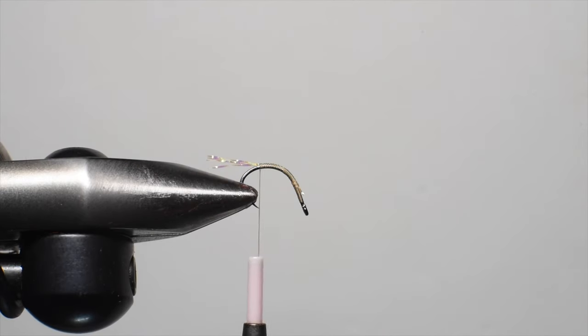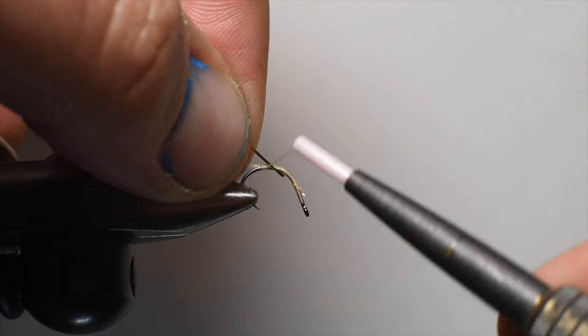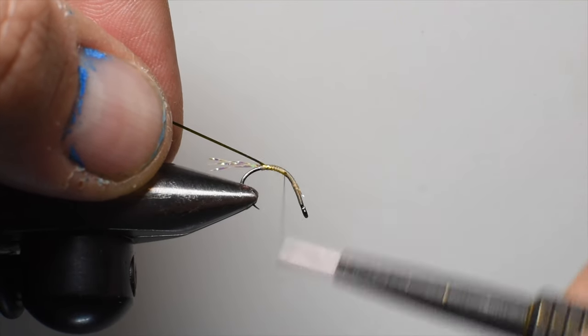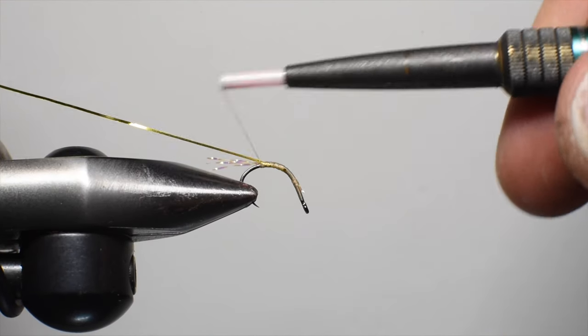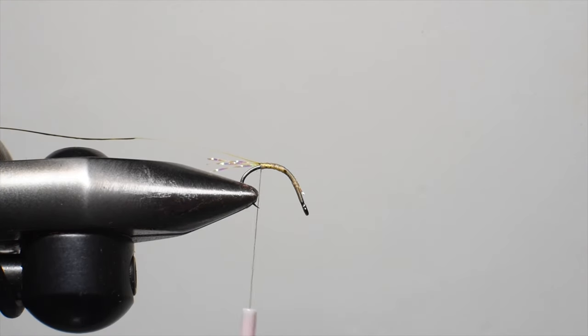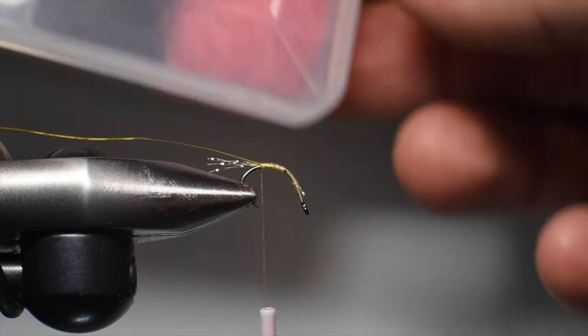We're going to rib this with some flat tinsel by Semperfly. This is the small. I usually use gold for this. We'll go ahead and cut off a three to four inch piece so it's easier to work with. We'll tie it in here at the bend. We're going to be putting quite a bit of dubbing on this shank so we're not too concerned with thread wraps. Like I said, it's always good to practice your thread wraps every wrap counting.